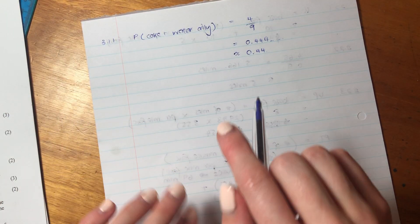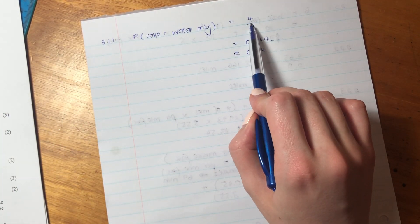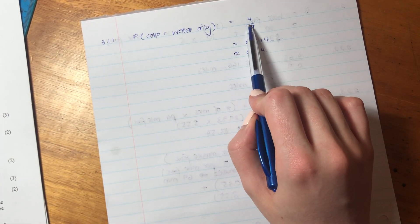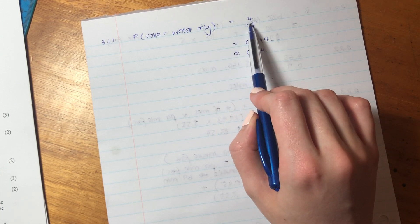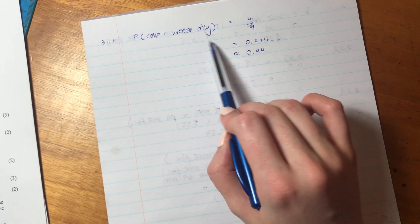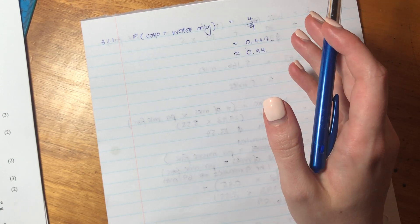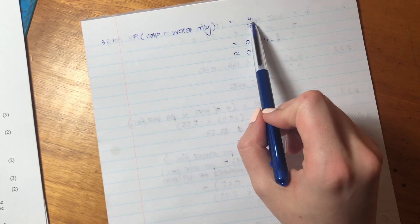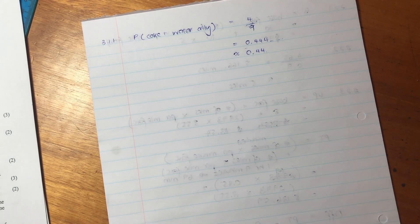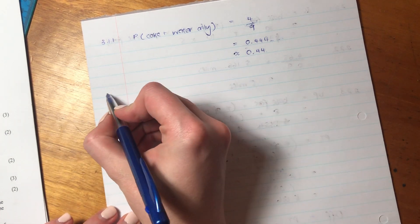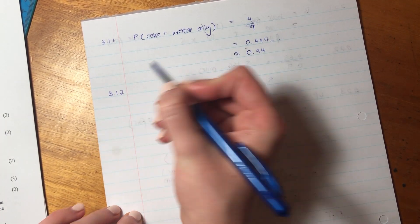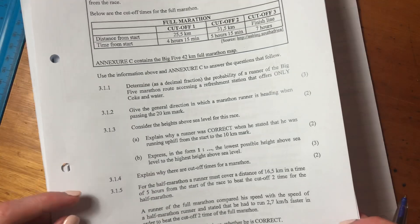Remember with probability, what we're saying is we're always saying, what are the events that meet our criteria? So there are four ways it could meet our criteria of coke and water only. And then what are all the other ways that we can be at a refreshment station? So there's nine refreshment stations, but only four of them meet our criteria. So it's important to always think about probability in that way.